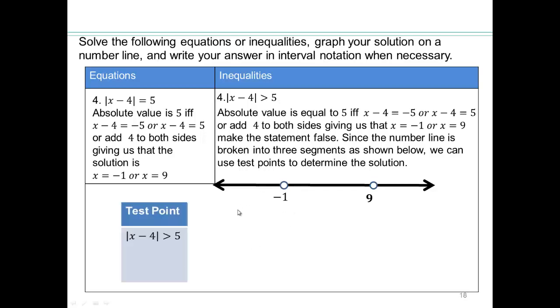So let's do our test point. And we need a point from here, say negative 2. Absolute value, negative 2 minus 4 is absolute value negative 6 is 6. 6 is bigger than 5, which is a true statement. So all of this is part of the solution.